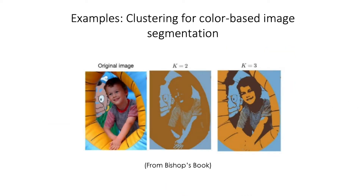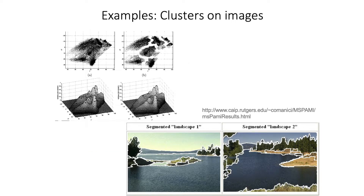In a more classical example from Bishop's book, we can use clustering methods to create color-based segmentation on images. In a clearer example, we can run clustering to actually segment objects and help downstream systems interact with those objects, understanding which pieces of the image belong to one object or another. These clustering methods need to run over some representation of the image, such as the color histogram or some texture features.